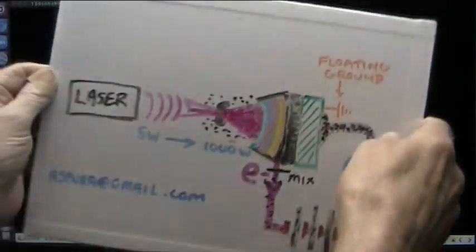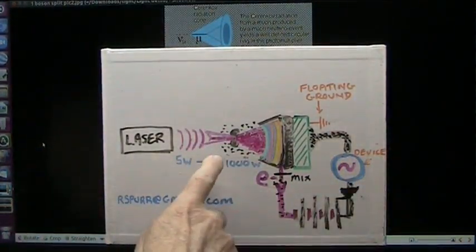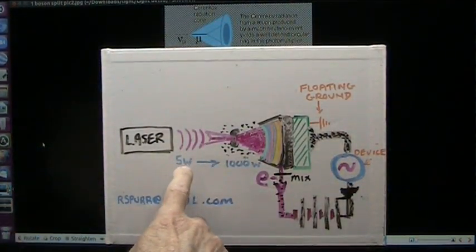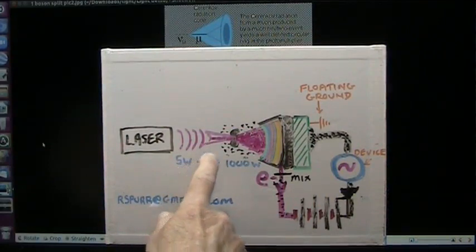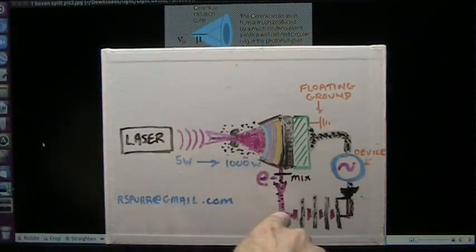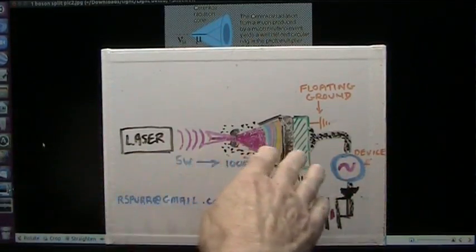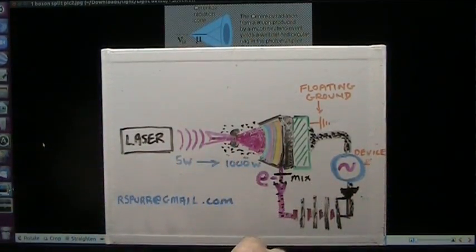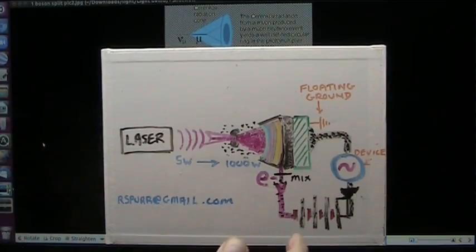So we have a source of muons. That source of muons is 200 times more energetic than our input value. So we're going to harvest those through very inexpensive, the cheapest materials made, and they are solid state.